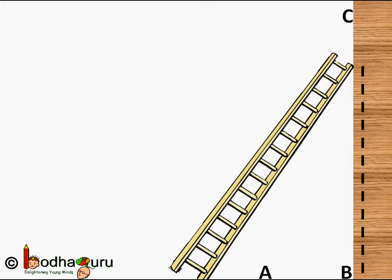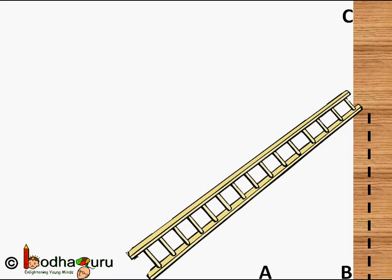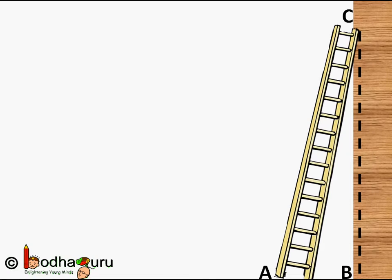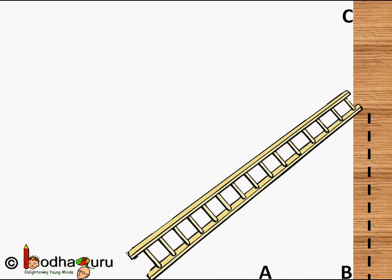If we reduce angle X — that is, slightly move the base of the ladder away from the wall — the measure of the opposite side BC will reduce, meaning we will be able to climb on the wall to a lesser height. But as we move the ladder down, the distance AB increases. So when X is decreasing, the opposite side BC is also decreasing, but the adjacent side AB is increasing.